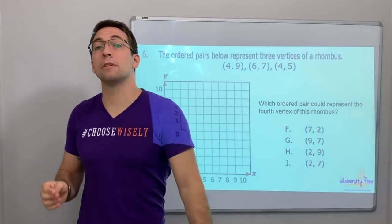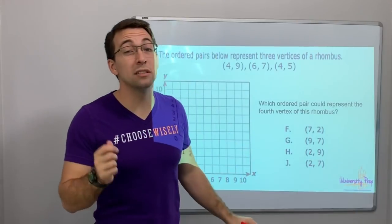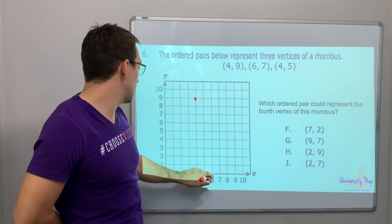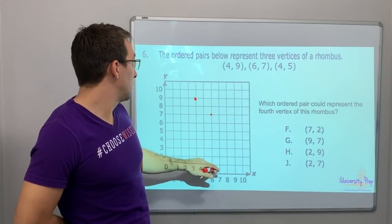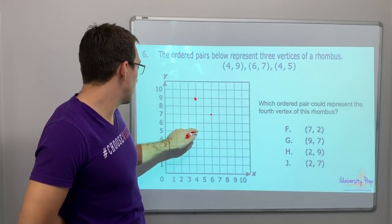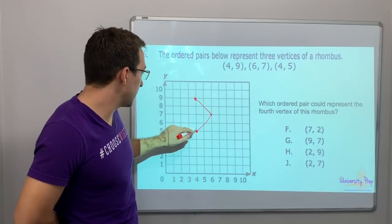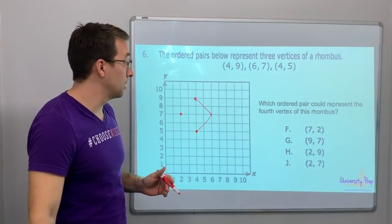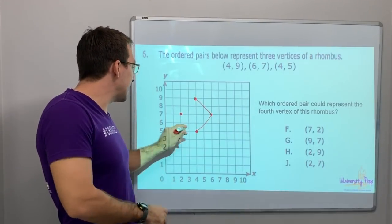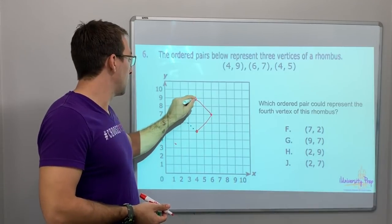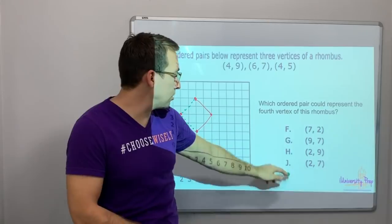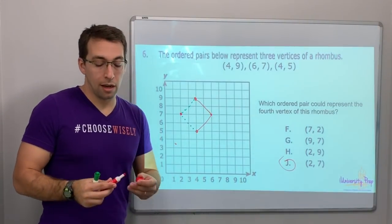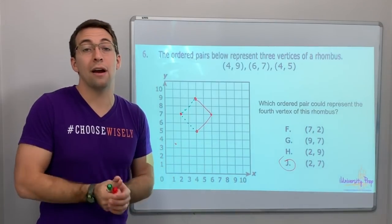When you take the STAAR test, stay calm, stay cool, finish the test strong, catch your mistake, and move on. The ordered pairs below represent three vertices of a rhombus — a rhombus is a tilted square. Four-nine, six-seven, four-five. It looks like two diagonals forming a square shape. I think the fourth vertex is going to be right there — two-seven. And two-seven is an answer, so let's go with it. That is a rhombus. Thanks for watching!